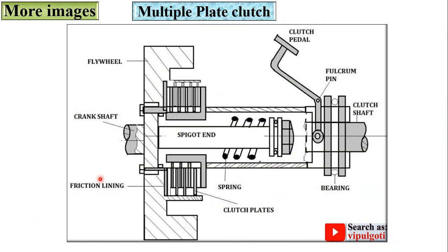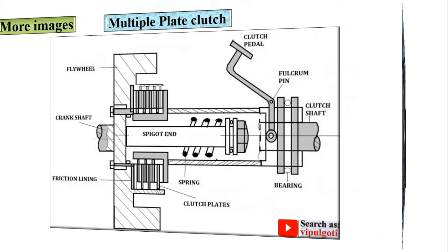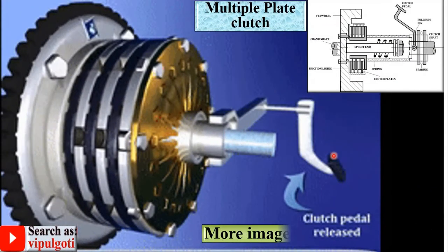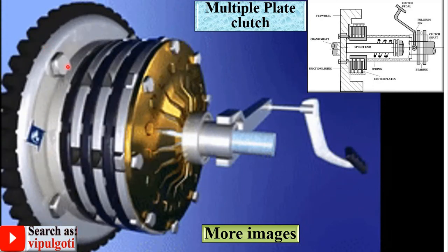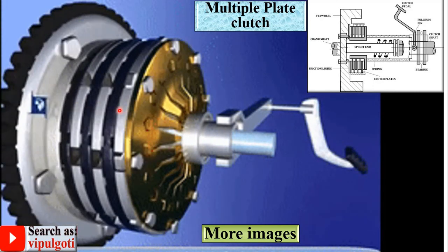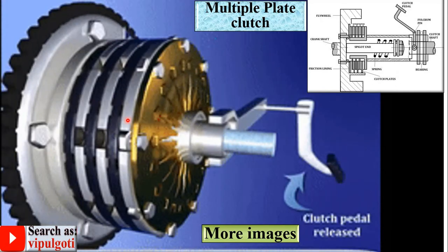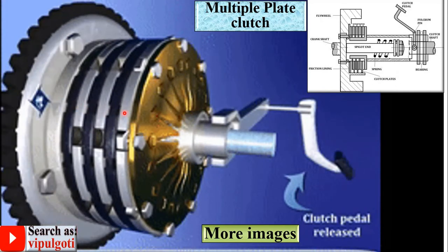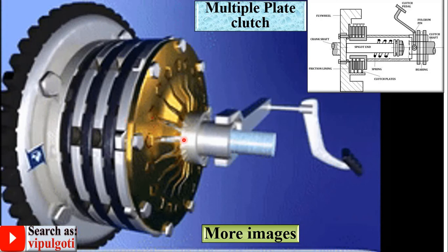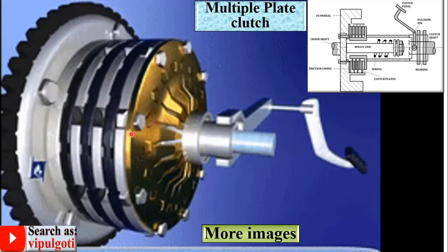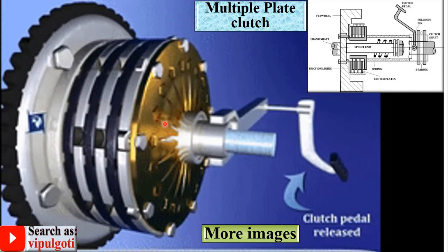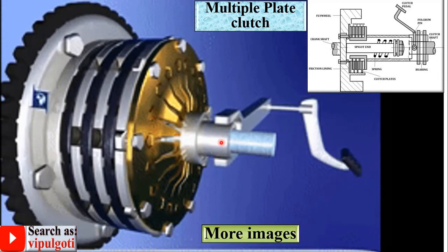Here is a simple image useful for examination purposes. In the animation, this one is the pressure plate, this one is the flywheel, and these are the multiple plates, sometimes called friction plates. With the help of the pedal you can give the input to engage and disengage the driving shaft and driven shaft.